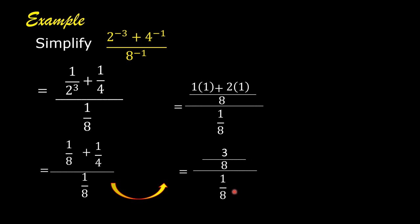That is, change division to multiplication and invert the divisor. So we have 3 over 8 times 8 over 1. We can cancel 8 and 8. So the answer is 3.